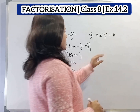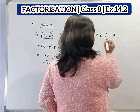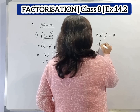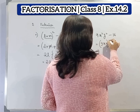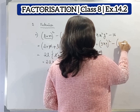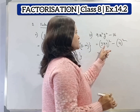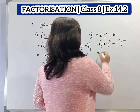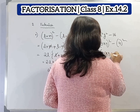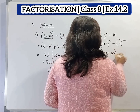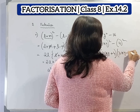Now next question: 9x square y square minus 16. We can write it as 3xy whole square minus 4 square. So here a equals 3xy and b equals 4. Therefore the answer is 3xy plus 4 into 3xy minus 4.